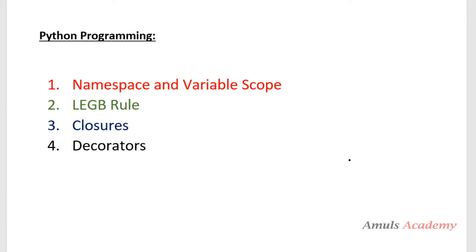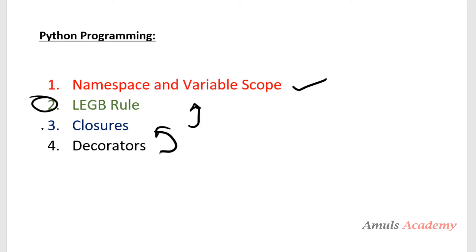Hello guys and welcome to Python programming tutorials by Amuls Academy. Many people were asking me to make a video on decorators, so here I am. To understand decorators completely, we need to learn a few other concepts first. We need to know what a closure is, and to understand closures we need to know what namespace and variable scope are. In this tutorial we'll cover namespace and variable scope, next we'll cover the LEGB rule, then closures, and finally decorators.